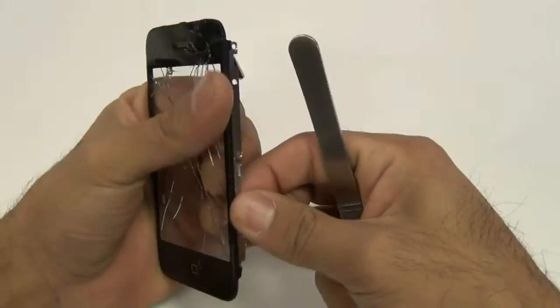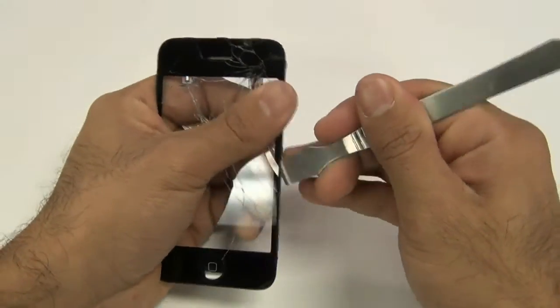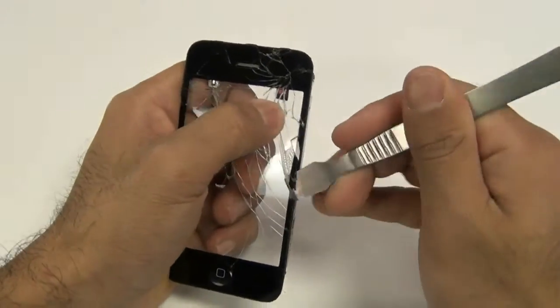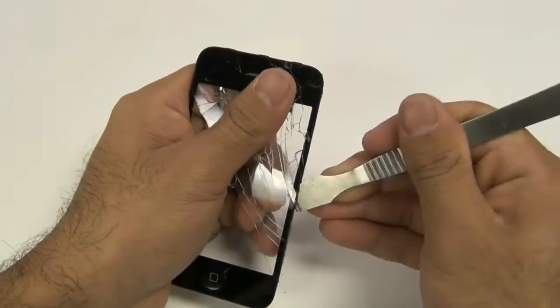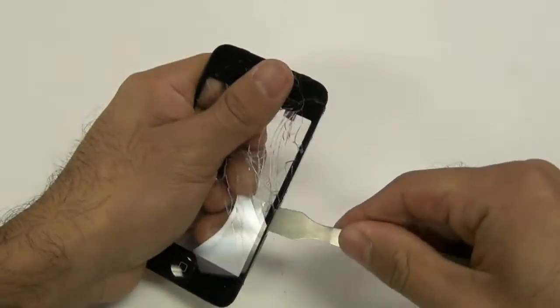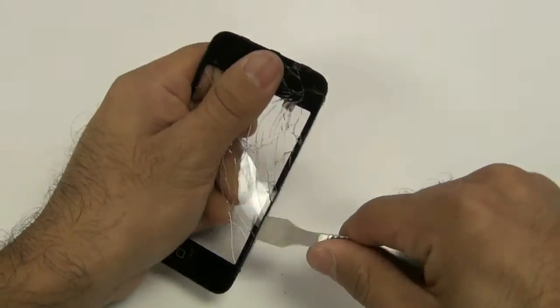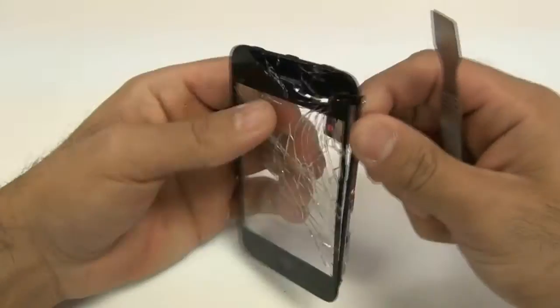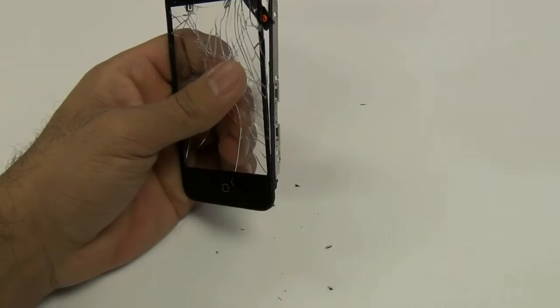Using a spudger or pry tool, work around the sides of your touchscreen, removing the glass from the mid-frame. If it doesn't come off easily, use your heat gun to heat the adhesive more.